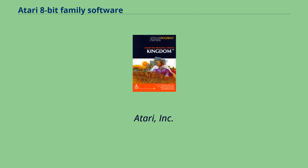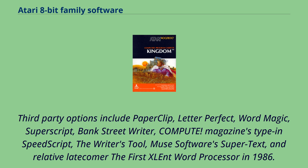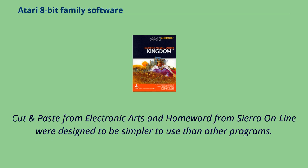Atari Inc. published the Atari Word Processor in 1981, followed by the more popular Atari Writer cartridge in 1983. Third-party options include Paperclip, LetterPerfect, WordMagic, Superscript, Bank Street Writer, Compute! magazine's type-in SpeedScript, the Writer's Tool, Muse Software Supertext, and relative latecomer The First Word, an excellent word processor from 1986. Cut and Paste from Electronic Arts and Homeward from Sierra On-Line were designed to be simpler to use than other programs.